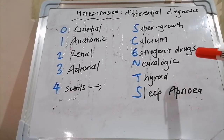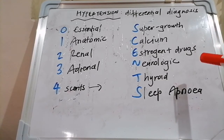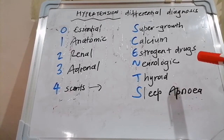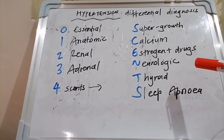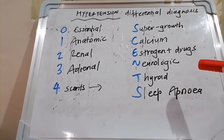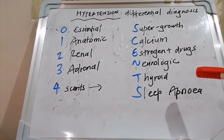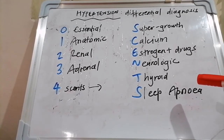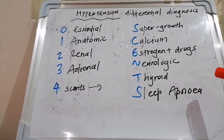N stands for neurological — Cushing's triad, where you see hypertension with bradycardia and respiratory depression due to raised intracranial pressure. T stands for thyroid: both hyperthyroidism and hypothyroidism can cause hypertension. Hyperthyroidism usually gives isolated systolic hypertension and hypothyroidism isolated diastolic hypertension, though not always. S is for sleep apnea.